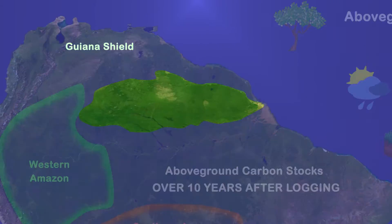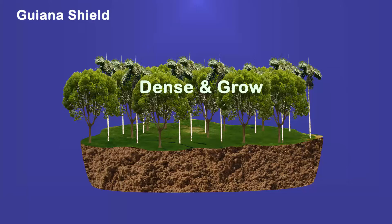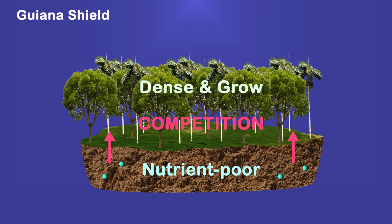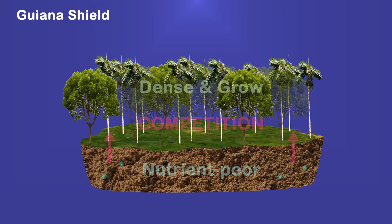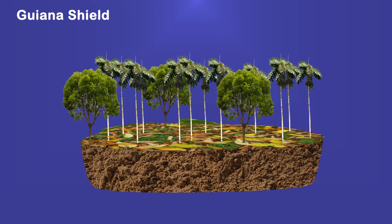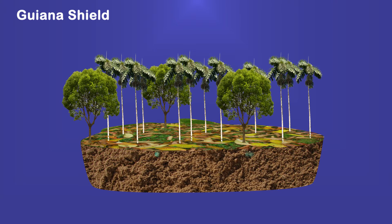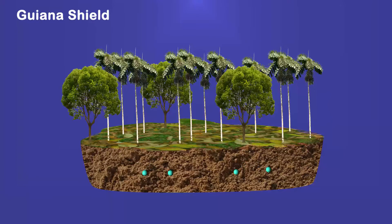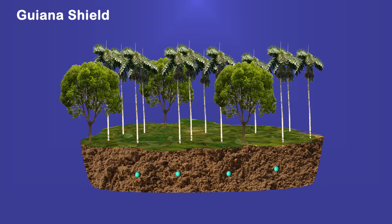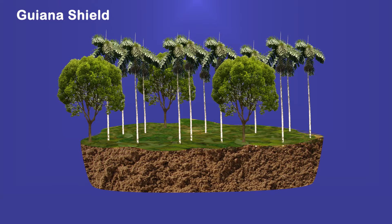Forests of the Guiana Shield are generally dense and grow on nutrient-poor soils where wood productivity is constrained by competition for key nutrients. Short pulses of nutrients released from readily decomposed stems, twigs, and leaves of trees damaged and killed by logging explain the substantial but limited-duration increase in the growth of surviving trees.